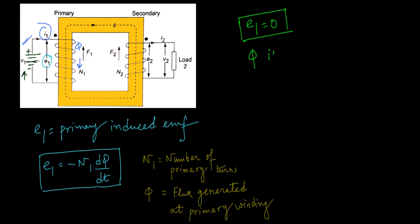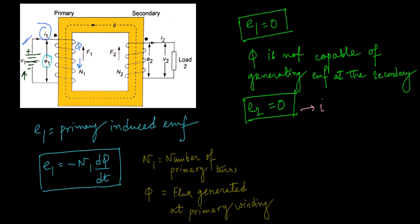If there is no induced EMF E1 in the primary, then this flux φ is not capable of generating EMF at the secondary terminal also. So if E2 is also 0, then this E2 can't generate any current I2, that is also equal to 0. If current I2 is equal to 0, then no current is flowing through this load, that means the entire transformer can't function or remains in inoperative mode.